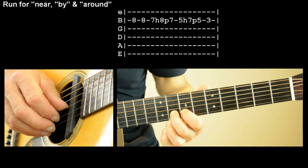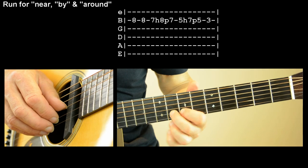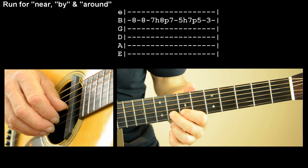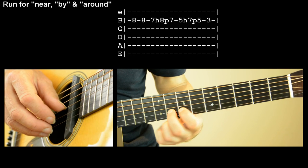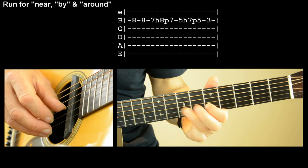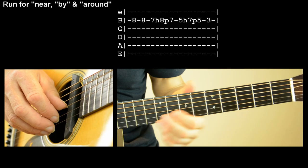Okay, so we're starting up here on 8. So H means hammer on and P means pull off. So that little run goes. Do that again.